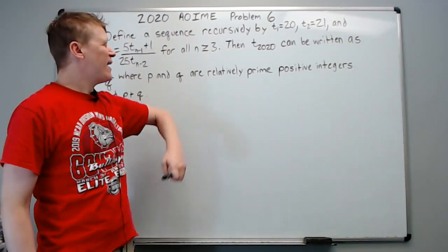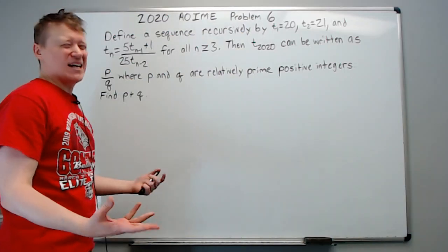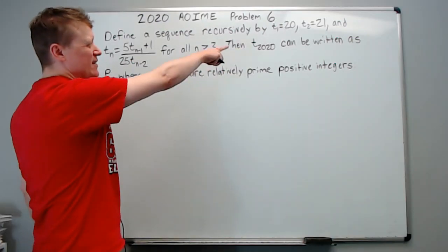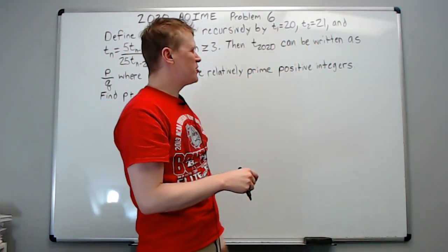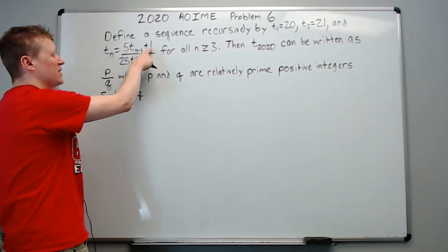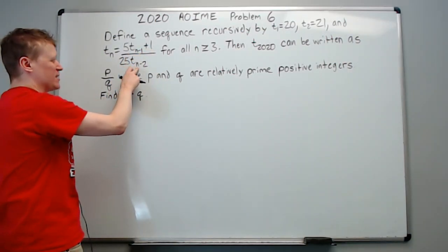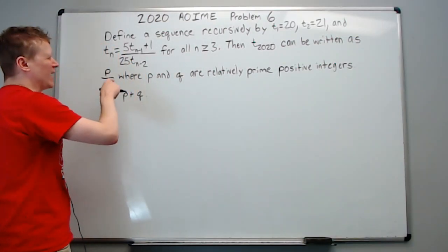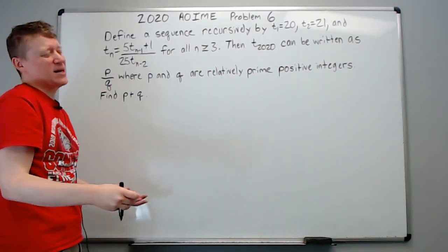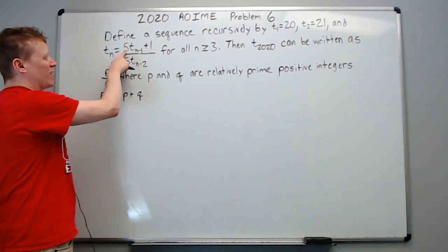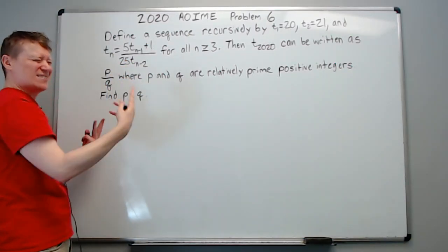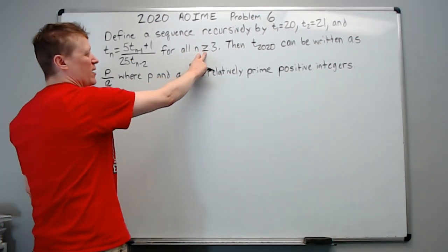We're doing the 2020 AIME problem 6 — probably the last problem I'll film tonight. Define a sequence recursively by t₁ = 20, t₂ = 21, and t_n = 5·t_{n-1} + 1 over 25·t_{n-2}. I like to convert this into words: t_n equals 5 times the previous term plus 1 over 25 times the second previous term. That makes a lot more sense, for all n ≥ 3.